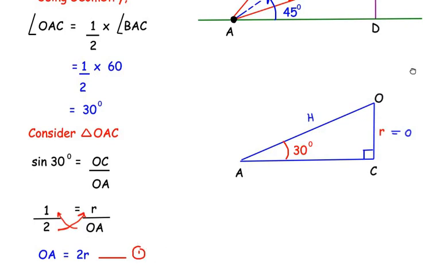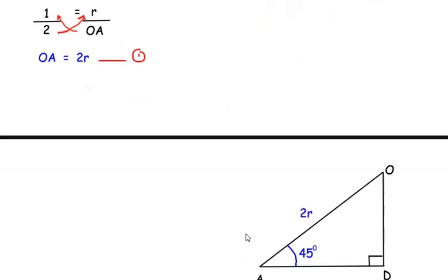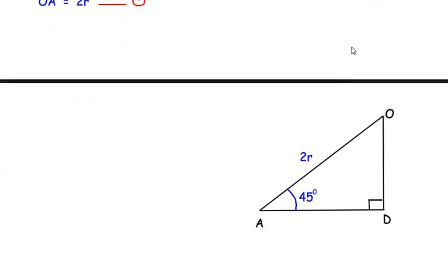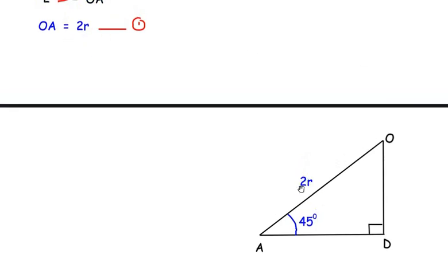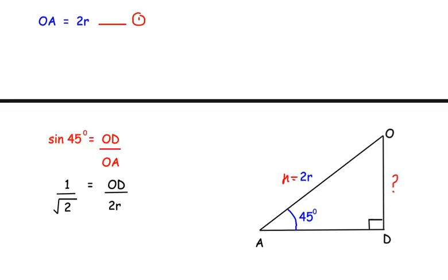Next, coming back to the figure, let us consider the right-angle triangle OAD. Here OA equals 2r (from equation 1) and angle OAD is 45 degrees. We need to find the height OD. The side opposite to the 45-degree angle is OD, and 2r is the hypotenuse. So we again use the sine trigonometric ratio: sine 45 equals OD over OA, which gives 1 over root 2 equals OD over 2r.